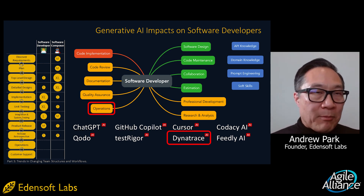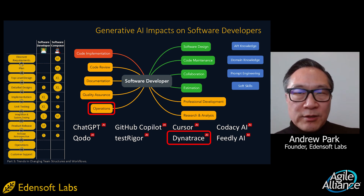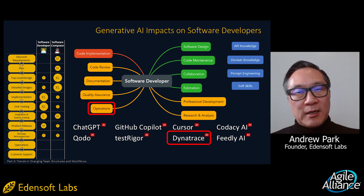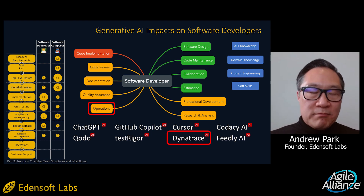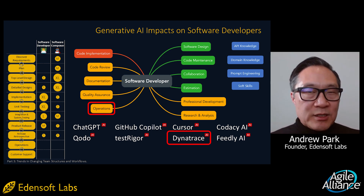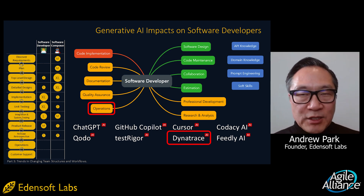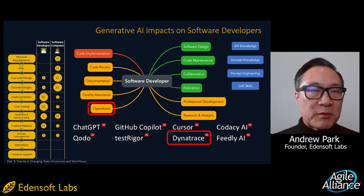For operations, Dynatrace has been a leader — Datadog is a competitor — and they've been working hard to incorporate a lot of AI insights to help identify bottlenecks faster. For any of these observability tools, expect that you'll still need human validation for complex cases, but there are exciting things happening in the observability space.